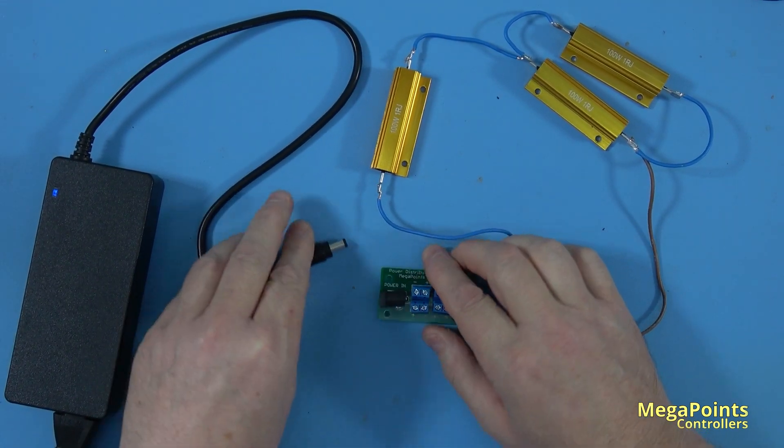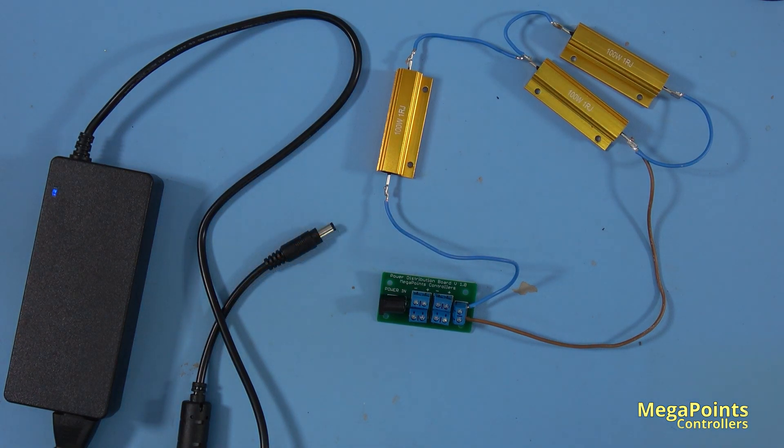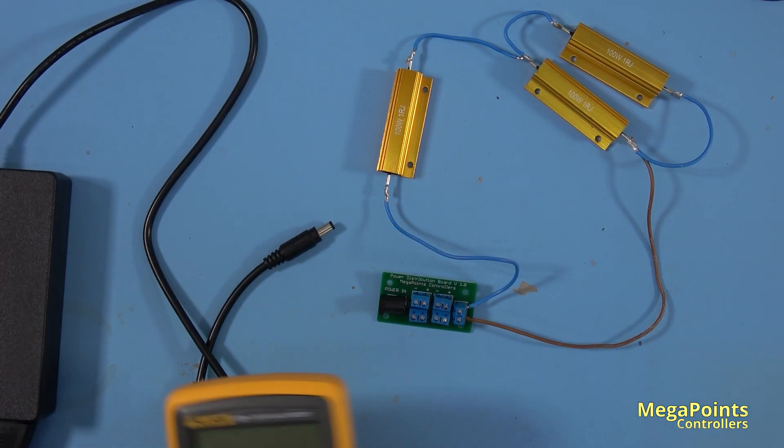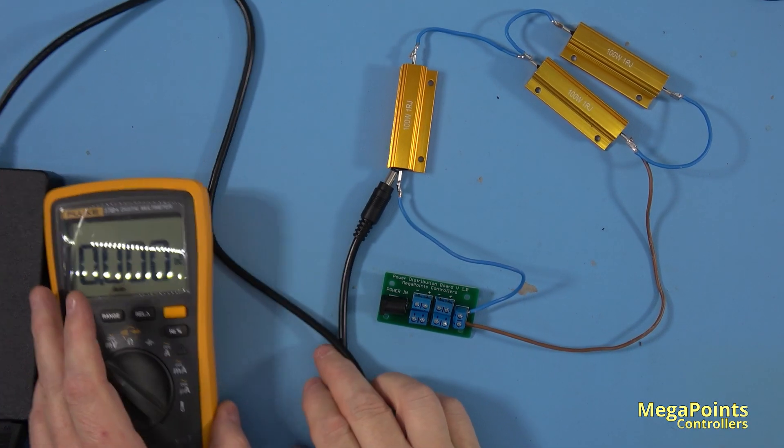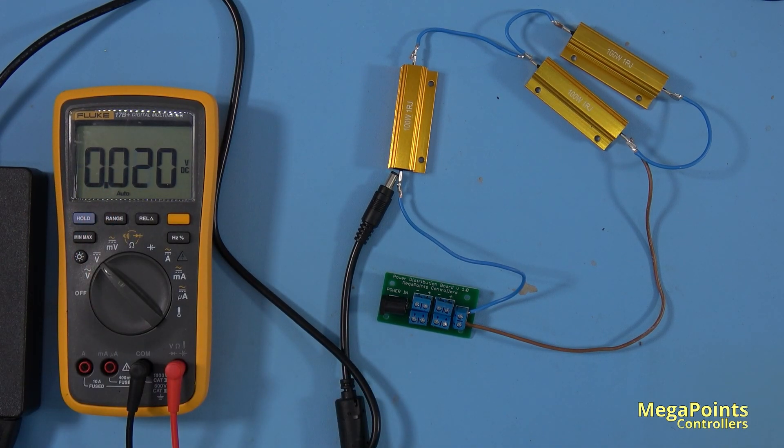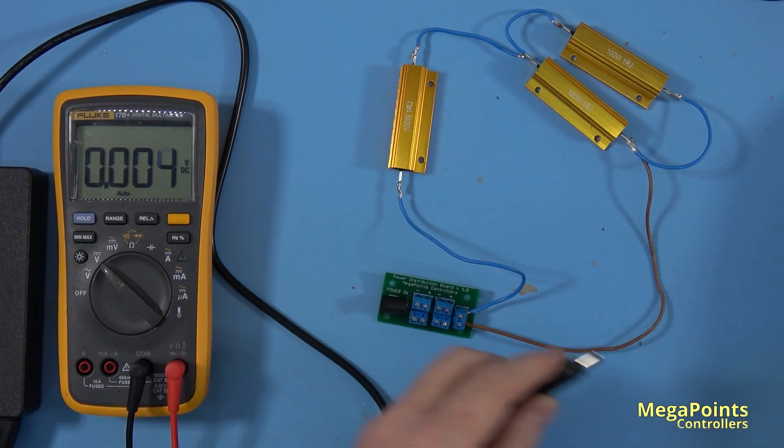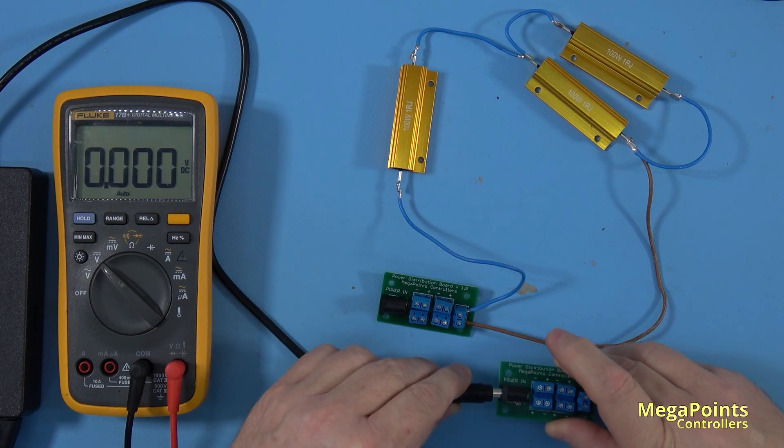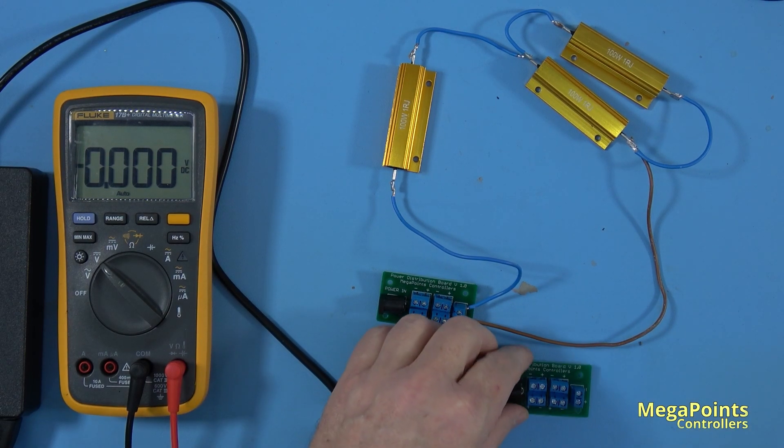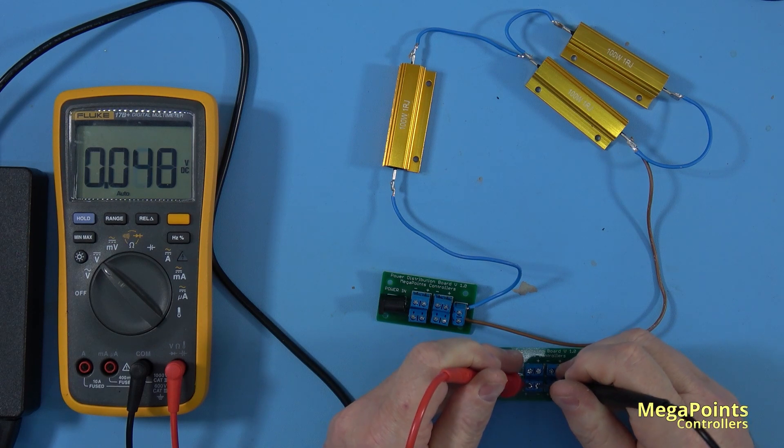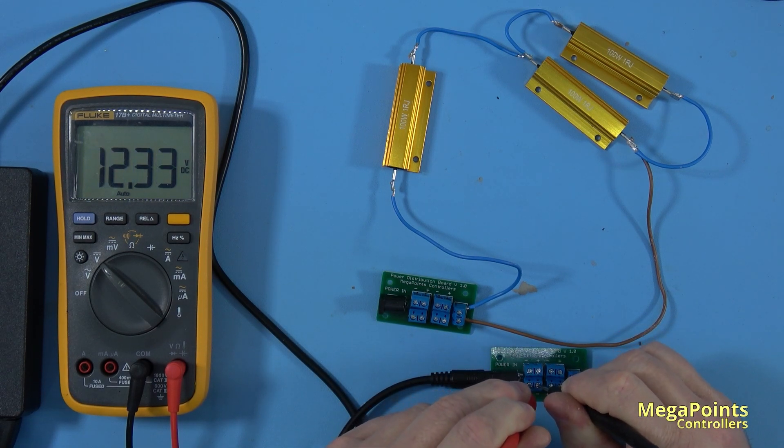I'll introduce the multimeter. First, let's measure voltage with an open load. It's reading 12.3 volts—great, it's a 12-volt power supply. Excellent, happy with that.